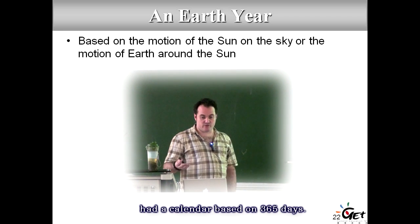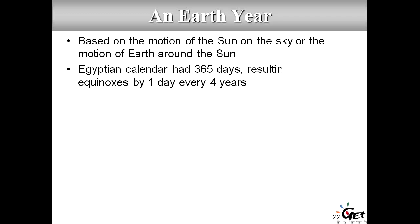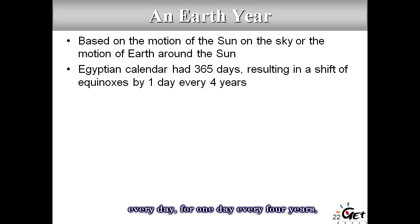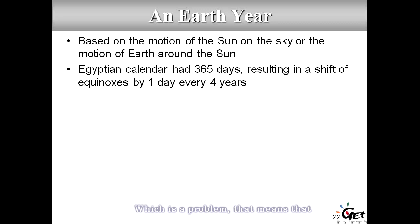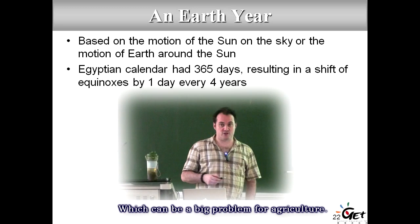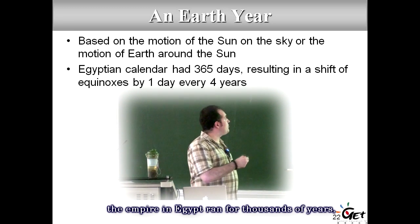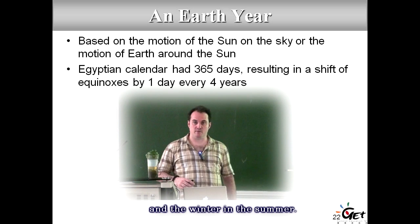The Egyptians, Mayans, and other ancient civilizations had a calendar based on 365 days. The problem is that a year is actually 365.25 days, so the equinox shifts by one day every four years. After a century that's 25 days — the summer starts 25 days later. After thousands of years you'd have summer in winter and winter in summer, which doesn't work for an empire like Egypt.